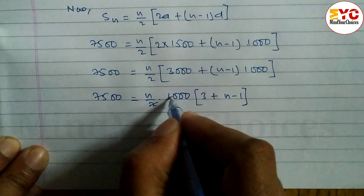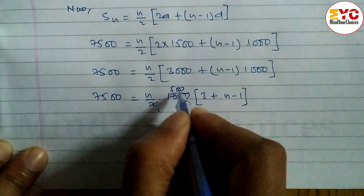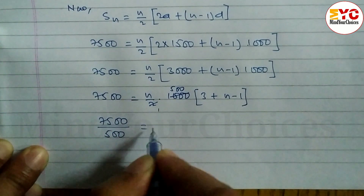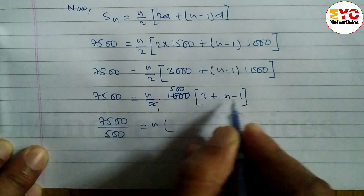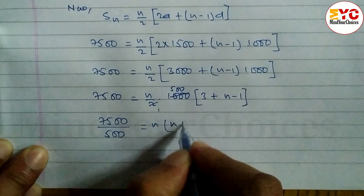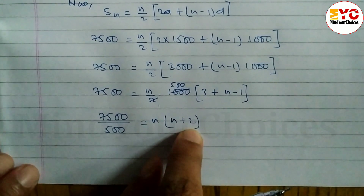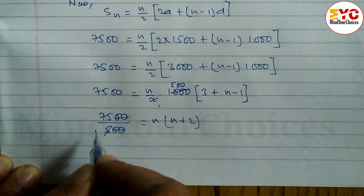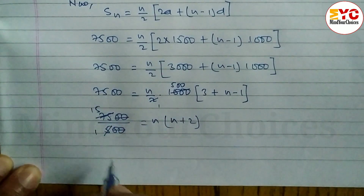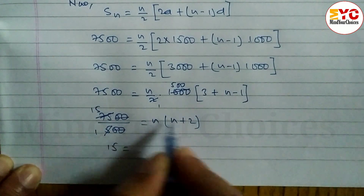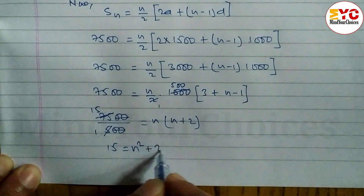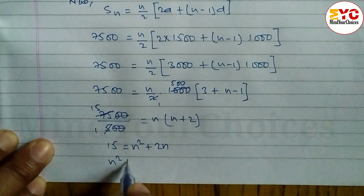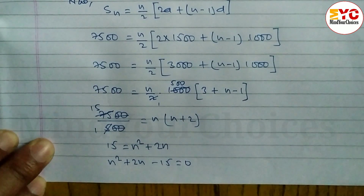Dividing both sides by 500: 15 = n(n + 2) = n² + 2n. Bringing 15 to the right side: n² + 2n − 15 = 0. Now we factorize this quadratic — we need two numbers that multiply to 15 and subtract to give 2.